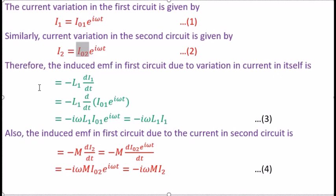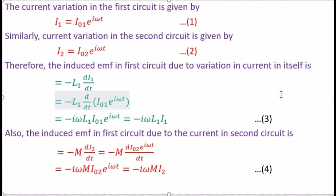When current flows, EMF is induced. The formula is L·dI/dt. In the first coil, the induced EMF is minus L1 times dI1/dt. Substituting I1 from equation 1, we get minus L1 times d/dt of (I01 times e raised to iota omega t). Taking the differential, e raised to iota omega t differentiates to iota omega times e raised to iota omega t, with I01 constant. So the induced EMF in the first coil equals minus iota omega L1 times I1.